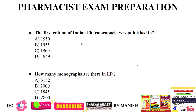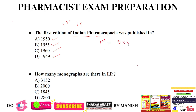Let's start with question number 1. The first edition of Indian Pharmacopeia was published in: 1950, 1955, 1960, or 1949? The editions of Indian Pharmacopeia are most important for your examination point of view, so just revise with me. The first edition of IP was published in 1955.